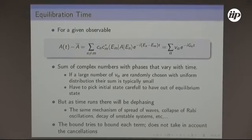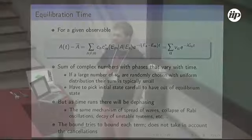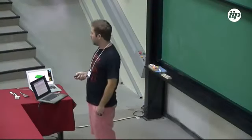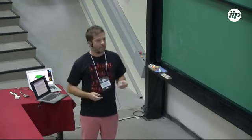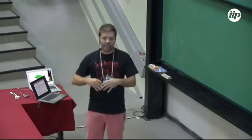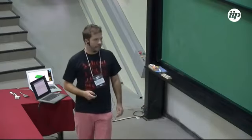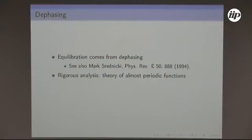Why does the previous bound explode exponentially? In a naive way, you're trying to make individual terms of the sum small, rather than exploiting cancellation between all terms. The equilibration is really a cancellation between all terms, not the fact that some become individually small. This idea appears in papers on ETH — the Eigenstate Thermalization Hypothesis. To make this rigorous you'd need the theory of almost periodic functions, which is mathematically very hard, or you make approximations.